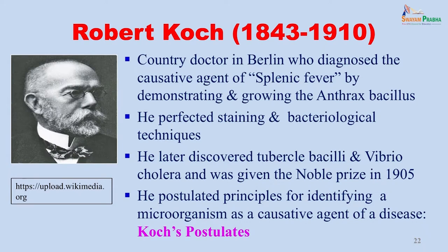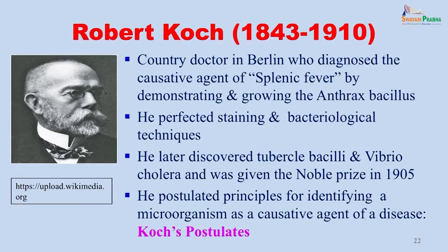Robert Koch was a doctor working in Berlin. At that time many sheep in Germany were dying of a disease referred to as splenic fever. He demonstrated and grew the anthrax bacillus from these sheep first. He then perfected staining and pathological techniques, and later discovered the tubercle bacillus and Vibrio cholerae — both diseases making a very big impact on the healthcare systems of the world. The tubercle bacillus is something we are still fighting to date. He was given the Nobel Prize for his contribution to clinical microbiology in 1905. He postulated certain principles for confirming that a microorganism is a causative agent of disease — Koch's postulates — which are still followed to date.